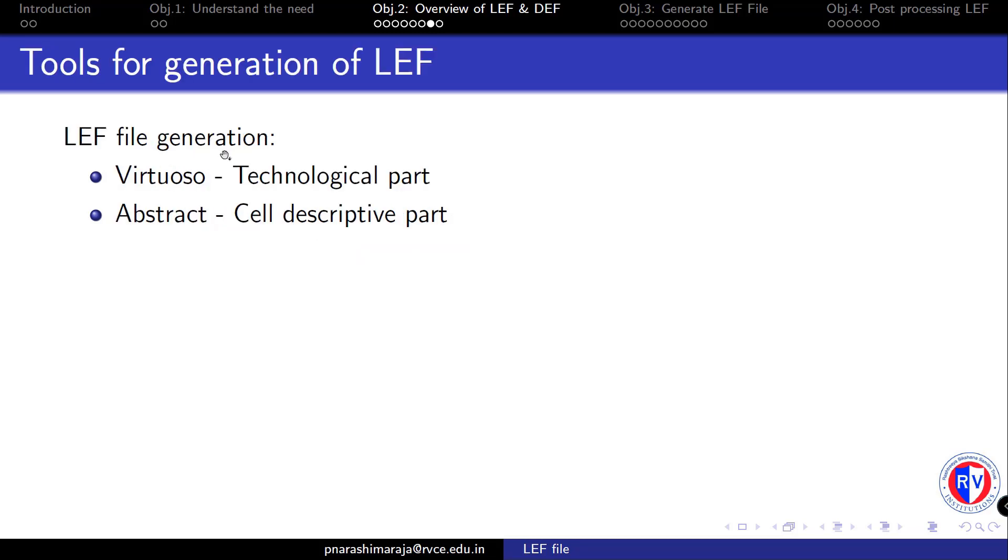Now let us focus on the tools that are used for the generation of the LEF file. We know that the LEF file basically contains two parts, and basically the first part of the LEF file is generated using Virtuoso, whereas the second part is added by making use of the Abstract tool.